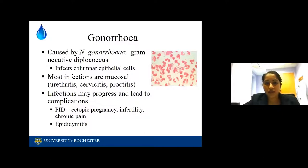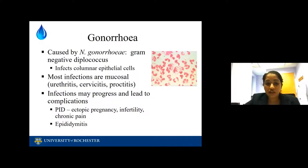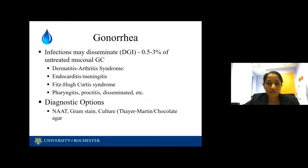Gonorrhea is caused by a gram-negative diplococcus, Neisseria gonorrhea. It infects columnar epithelial cells. Most infections are mucosal — urethritis, cervicitis, proctitis. Infections may progress and lead to complications like ectopic pregnancies, infertility, chronic pain, and epididymitis if untreated. Infections can disseminate in about 0.5% to 3% of untreated mucosal gonorrhea or chlamydia. You may have heard of syndromes like dermatitis-arthritis syndrome, endocarditis, meningitis, Fitz-Hugh-Curtis syndrome, pharyngitis, and proctitis.